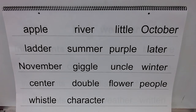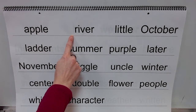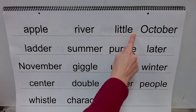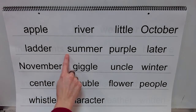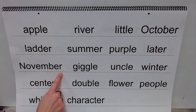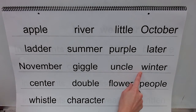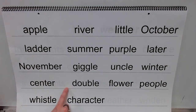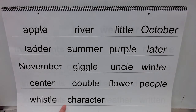Now pause the video to get ready to practice your spelling. Now let's practice reading our spelling words. Get ready. Apple, river, little, October, ladder, summer, purple, later, November, giggle, uncle, winter, center, double, flower, people, whistle, character.